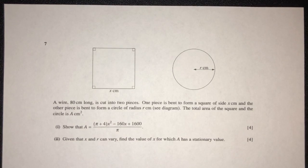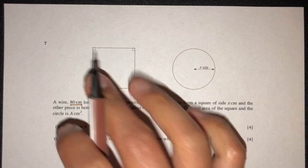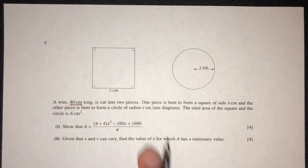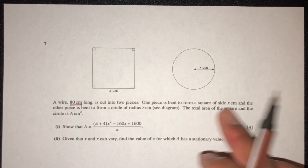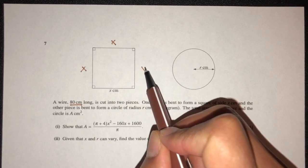Let's move on to the next question. A wire which is 80 centimeters long is cut into two pieces. So two pieces. Now the total length of both pieces will be 80 centimeters long. I hope that makes sense. Now one piece is bent to form a square of side x. This is x, x, x, and x because it is a square.